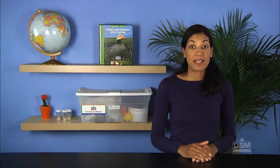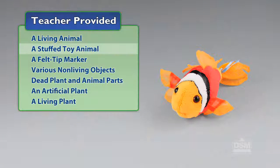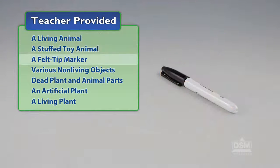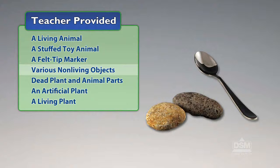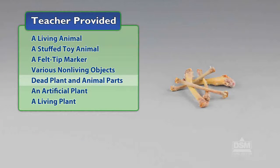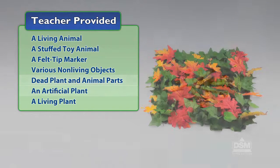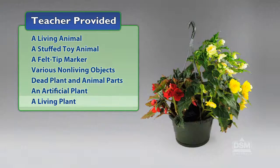You will also need to provide a living animal, a stuffed toy animal, a felt tip marker, various nonliving objects, dead plant and animal parts, an artificial plant, and a living plant.